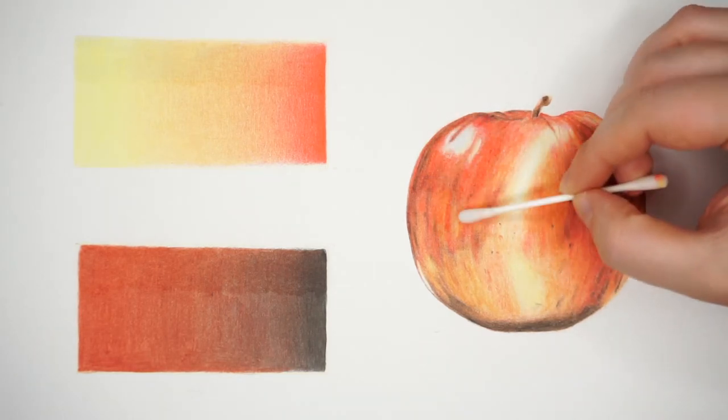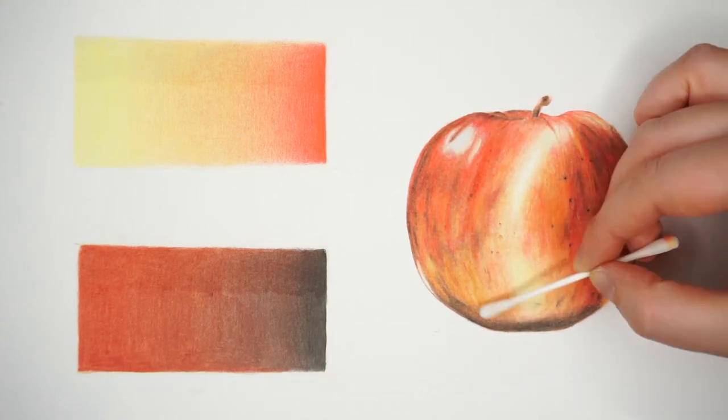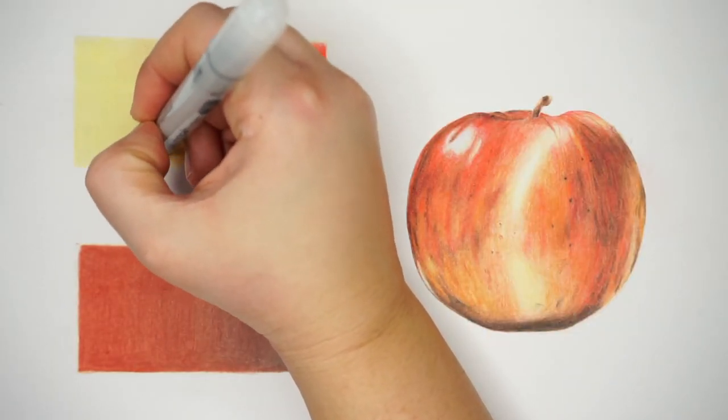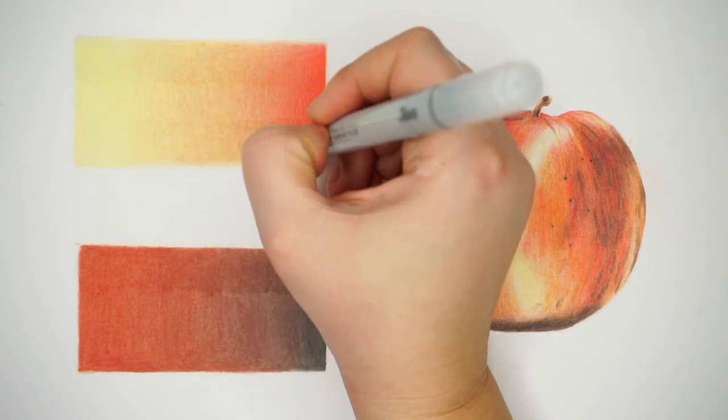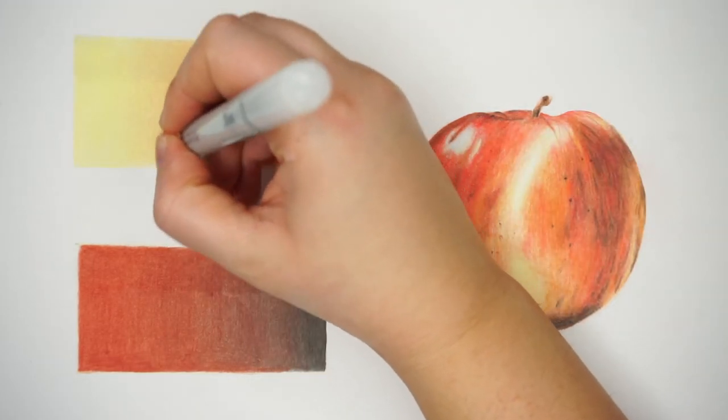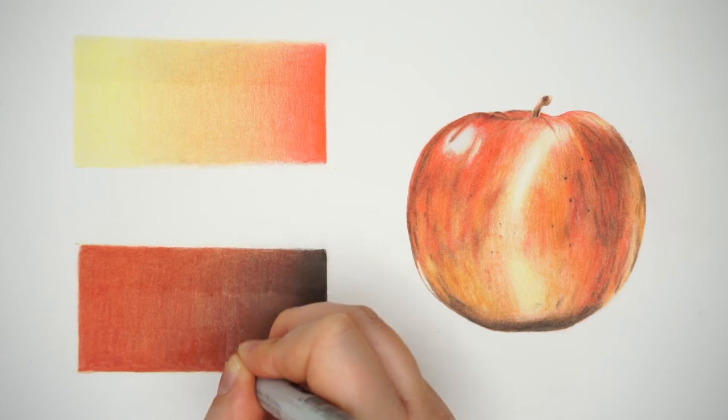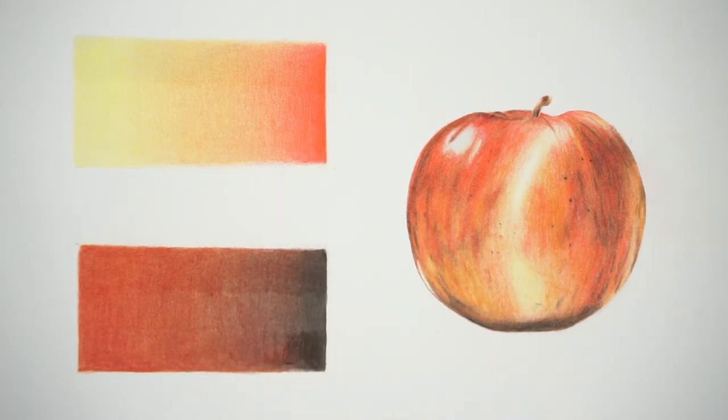I'm going to start with the Zest It and blend the top of both the swatches and the left hand side of the apple. Now I'm going to do the bottom of the swatches and the right of the apple with the Copic marker. As you can see, both look a little bit better than the Polychromos on their own, but only a tiny bit better here, and I would say they both look very similar to each other.